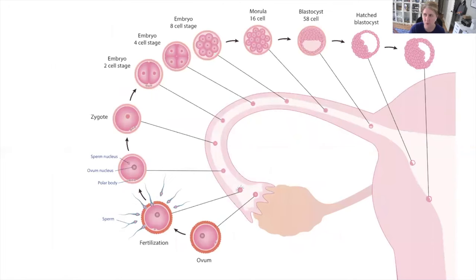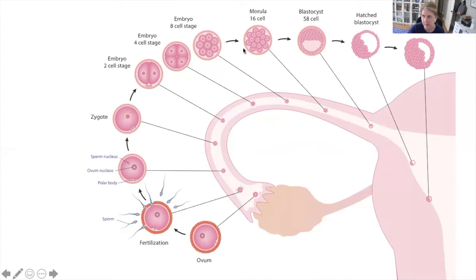Here's a visual of all of that happening. You can see the egg released from the ovary, fertilization, penetration of sperm into ovum, formation of the zygote, and then the cell divisions occurring. Remember the 16-cell organism is called the morula, which then becomes the blastocyst. The blastocyst continues to divide and ultimately implants in the uterus.